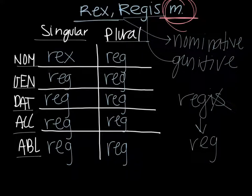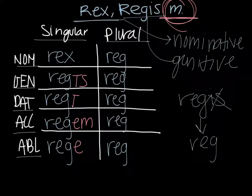So now we are going to put the correct endings on each of these words. So for the genitive singular it's is. For the dative singular it's i. For the accusative singular it's em. For ablative singular it's e. For nominative plural it's es.